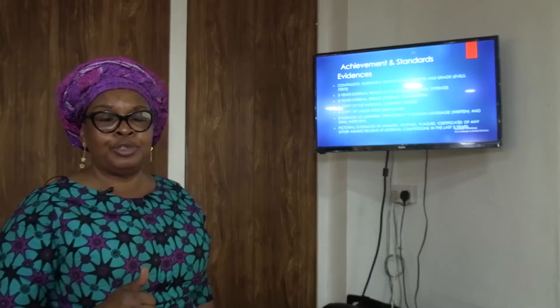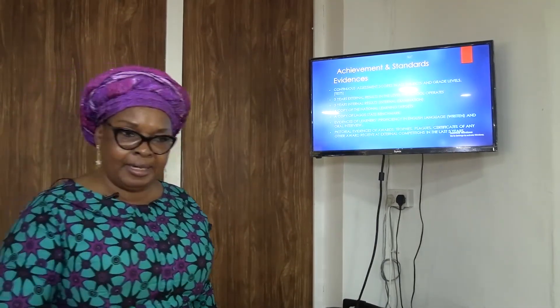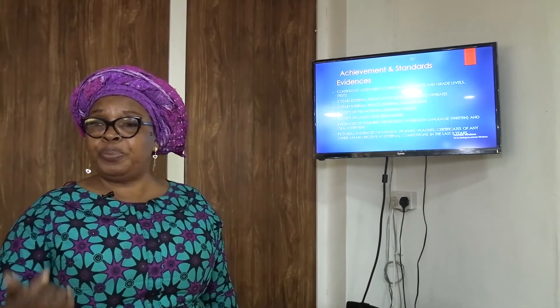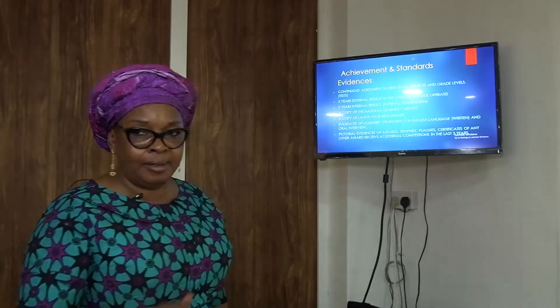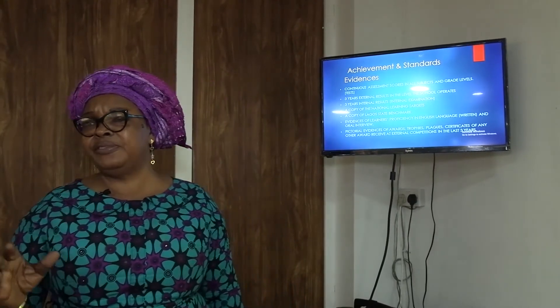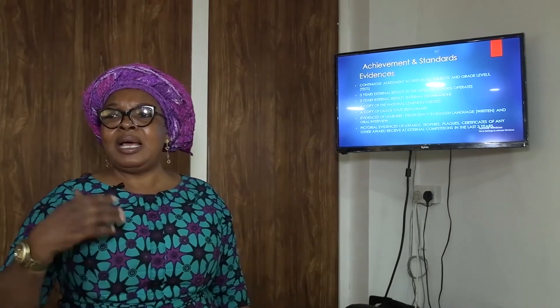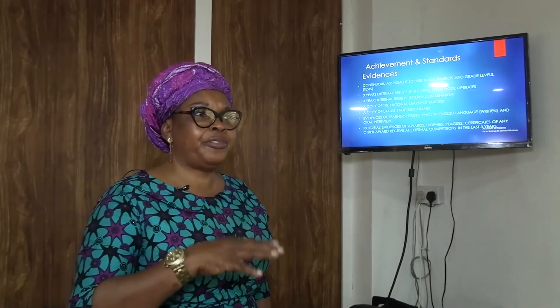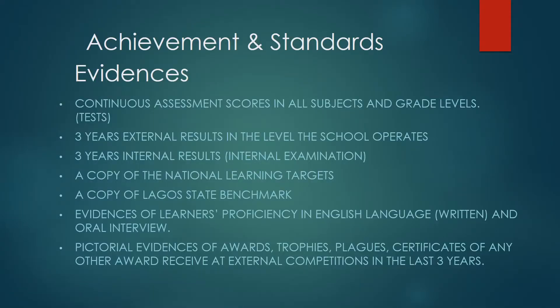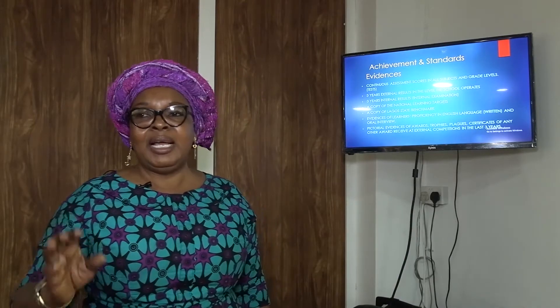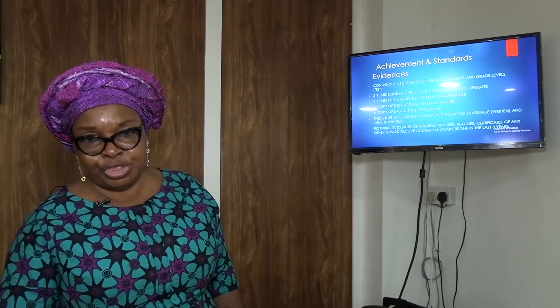If it is a primary school, pick children from Primary 1 up to Primary 6 — a boy and a girl. For secondary school, pick from JSS1 to SS3 — a boy and a girl. Take them somewhere conducive, make them feel at home, keep them calm, and don't threaten them. Ask questions to test their proficiency in English, which is the language of instruction. Let them write the name of their school and ask questions on anything; they can write responses on sheets of paper in addition to the oral interview.